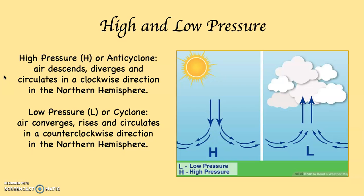Now look over at the right-hand side — we have a different diagram. With low pressure, also known as a cyclonic system or a cyclone, we indicate a low pressure system with a capital L on a map. With low pressure, the air converges, which means it comes together, it rises, and it circulates in the Northern Hemisphere in a counterclockwise direction. You can see the air is coming from the right and the left, converging right in the center, and then rising.